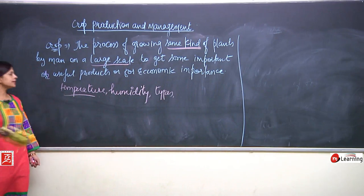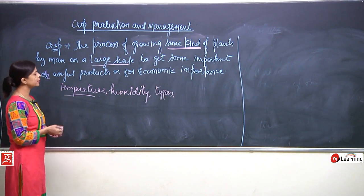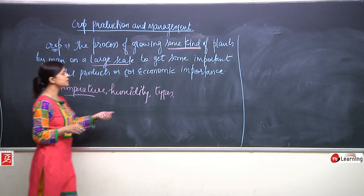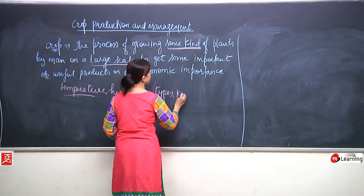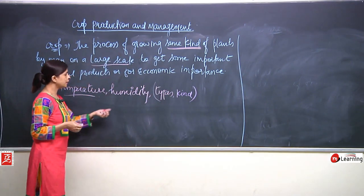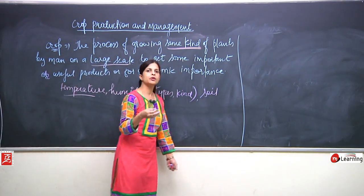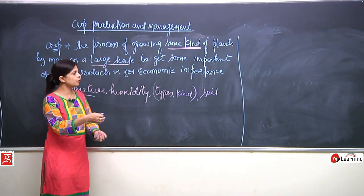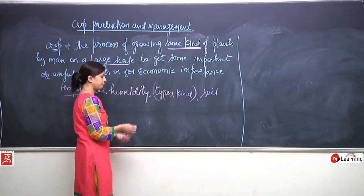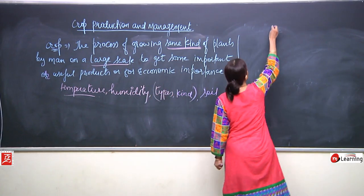I should not rub this because it is also very important — on the basis of temperature, humidity, and types, which kind the crops belong to. Even on the basis of different kinds of soil — some crops grow well in one particular soil and some in another. Now I will deal with the types of crops first of all, starting with cereals.